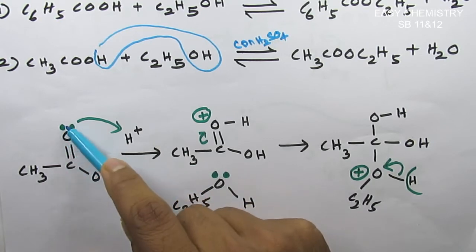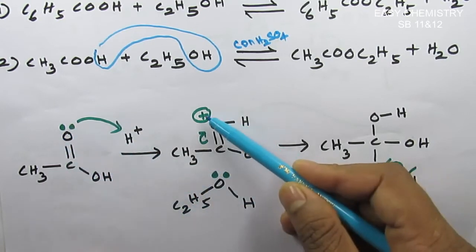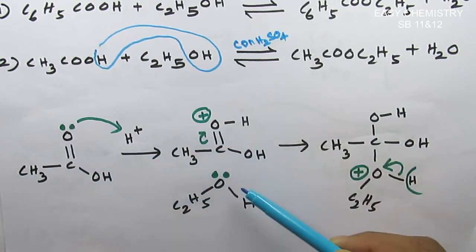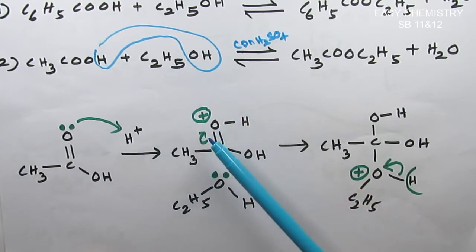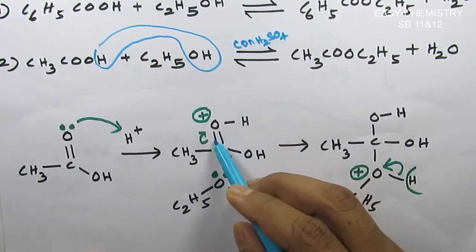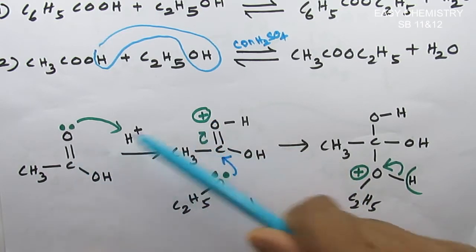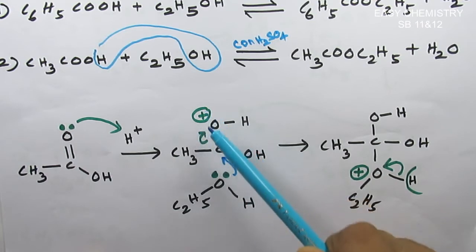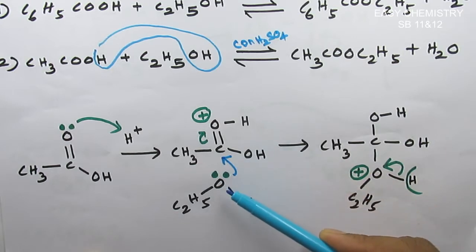The second step is nucleophilic attack. This is a neutral nucleophile. C2H5OH, ethyl alcohol. The two electrons form a bond. The carbon is tetrahedral. The double bond oxygen becomes O+. This two electrons make the oxygen positive, then neutral. This oxygen electron loss makes it plus, then the balance is neutral.